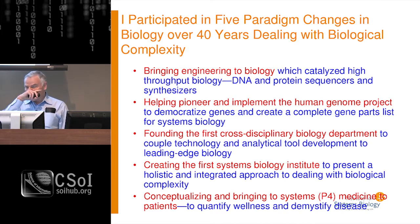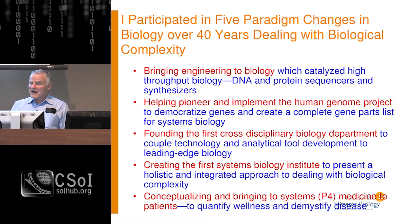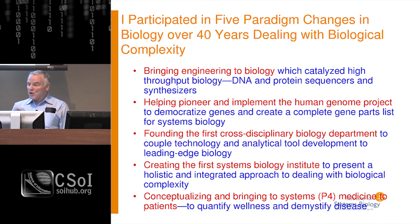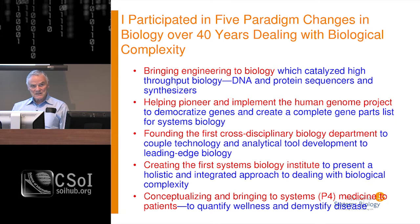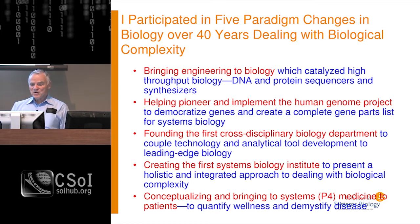The first paradigm change I carried out largely at Caltech was developing five instruments that gave us the ability to sequence and synthesize both proteins and DNA. All of these instruments ended up being commercialized — I started Applied Biosystems to commercialize the first four. What they led to was high-throughput biology. One of those machines, the DNA sequencer, got me invited to the first meeting ever held on the Human Genome Project, which was the second paradigm change.